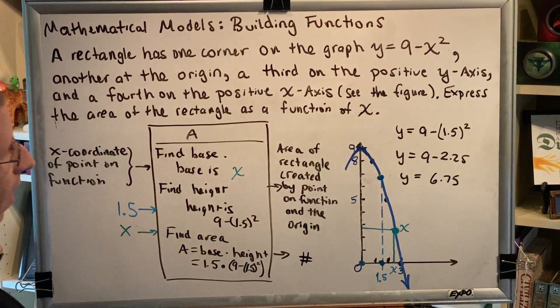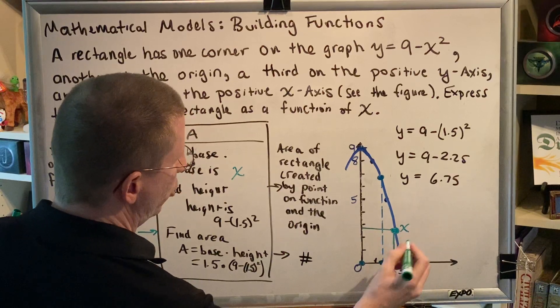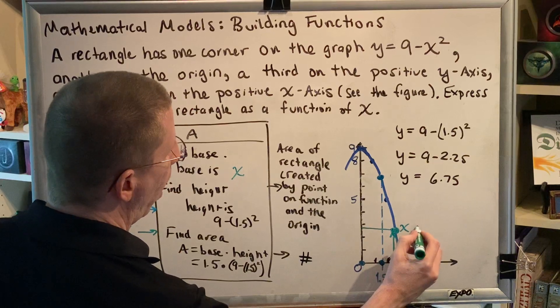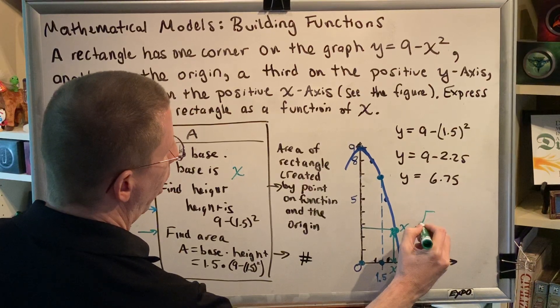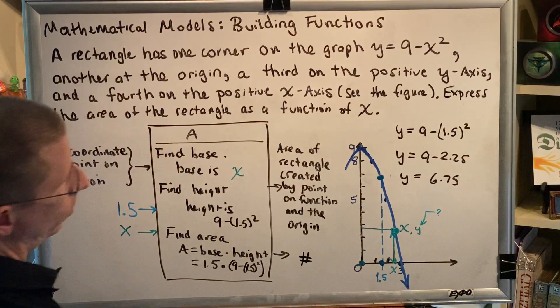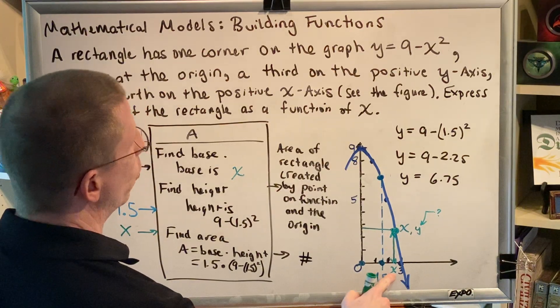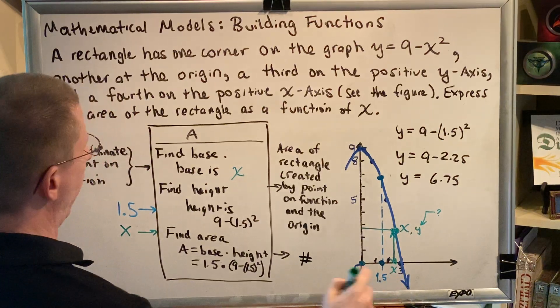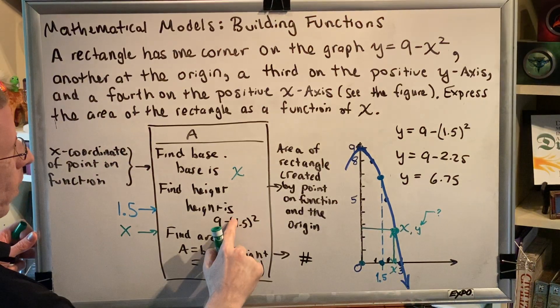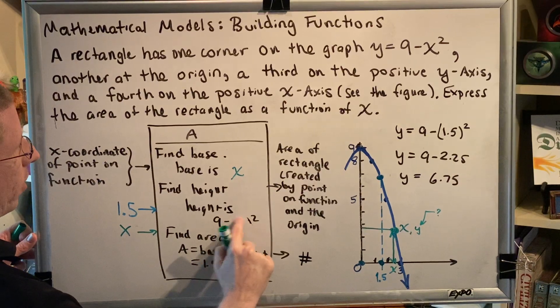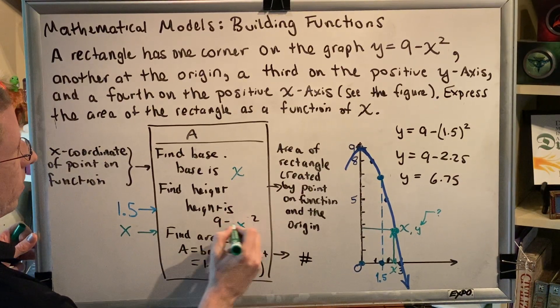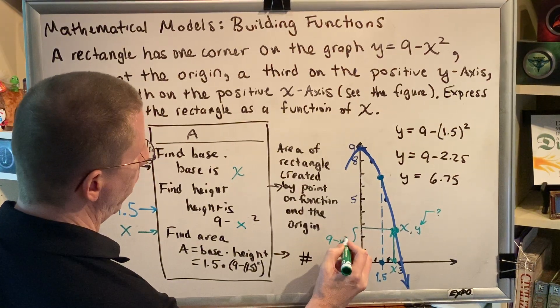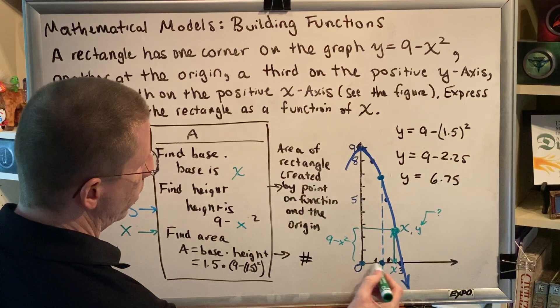Now we need to find the height, which is right here. To know what that is, you need the y-coordinate of the point. If you know x, then y = 9 - x². We don't know x as a number, but we know x as a letter, which means instead of 1.5², it's x². So our height is 9 - x². This is 9 - x², and this is x.